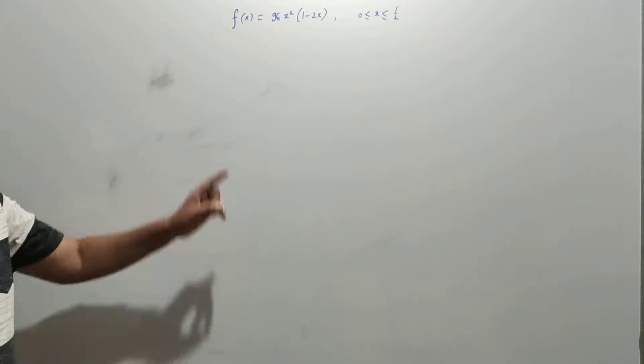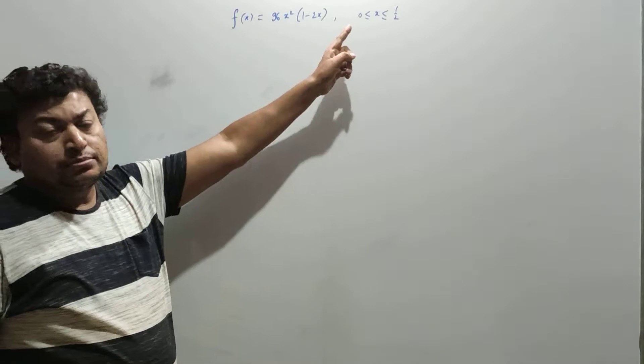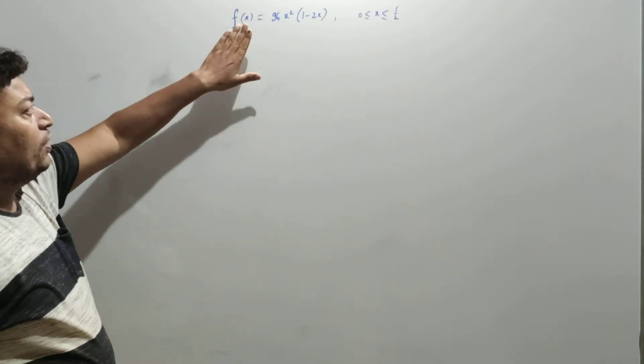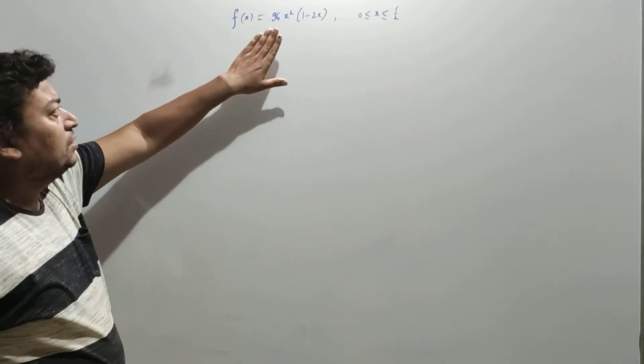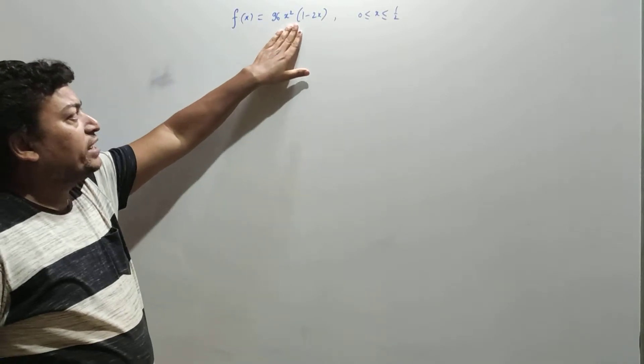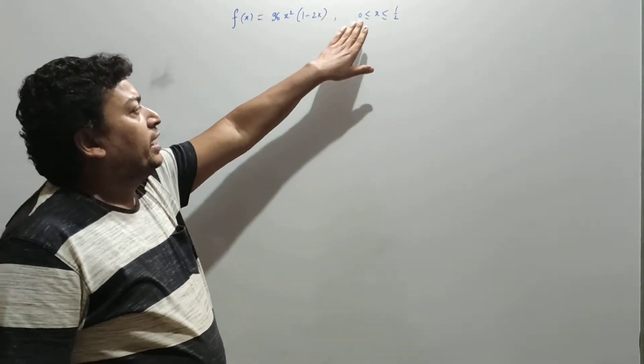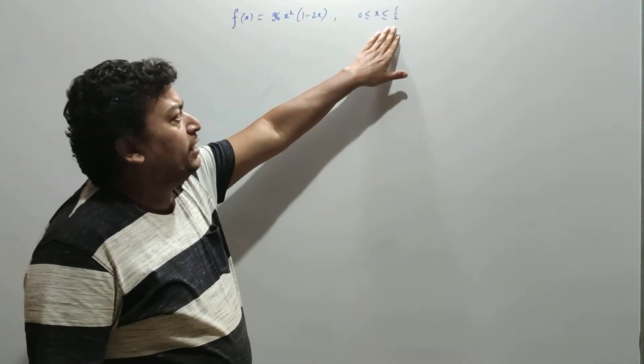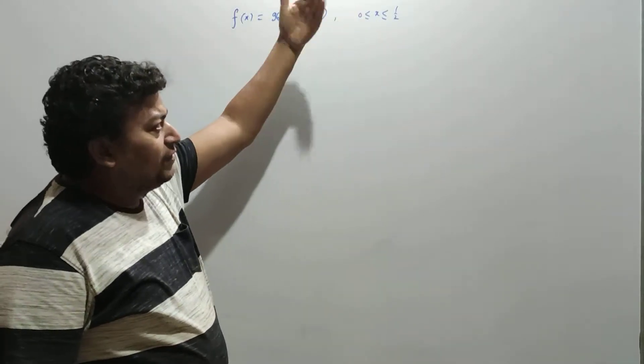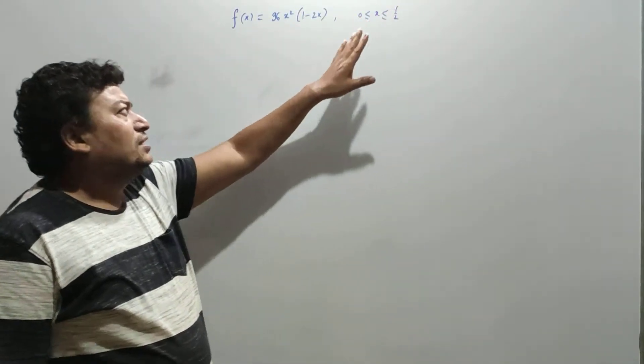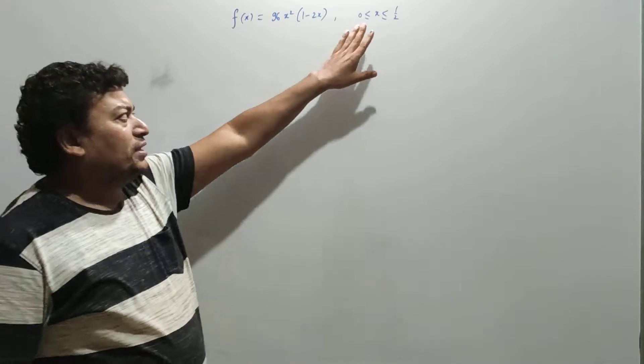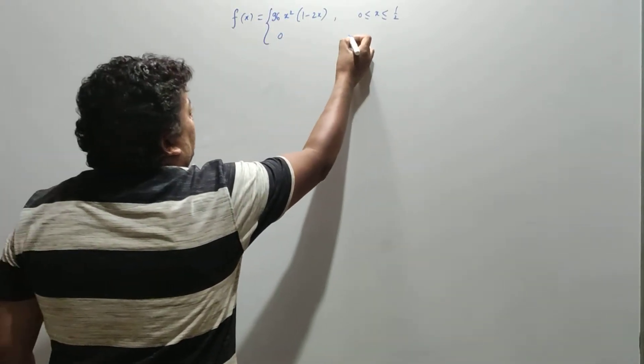We are continuing from the last problem where we found the PDF function: 96x²(1-2x) for x from 0 to 1/2. For other values, it's simply 0, so I'm not writing that—it was 0 otherwise.